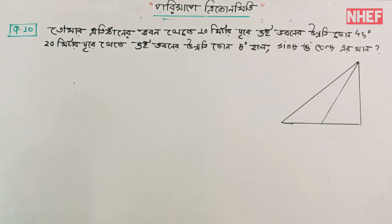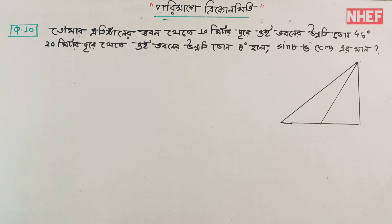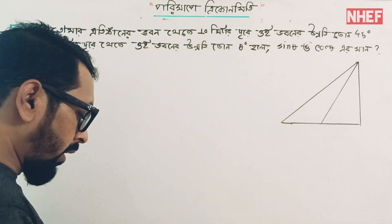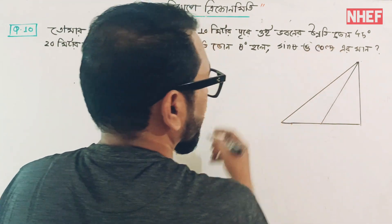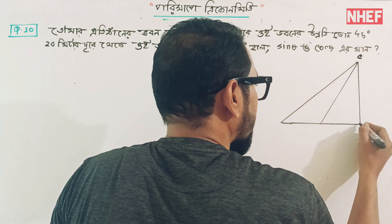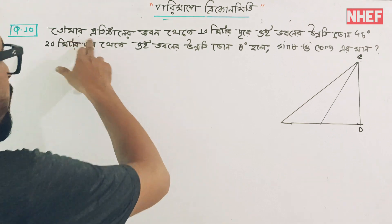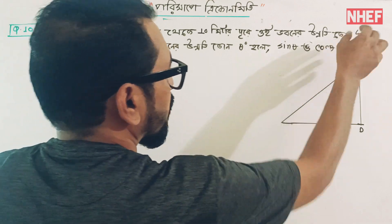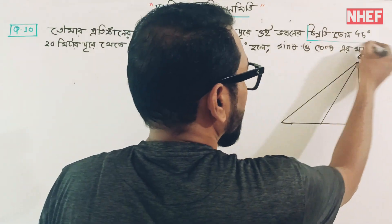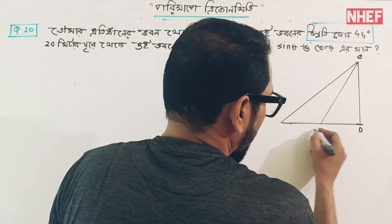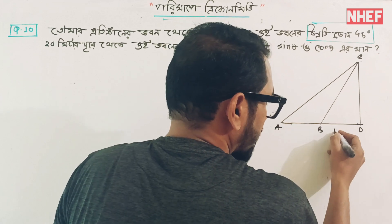Very good. A to the distance is 10 meters and A to the distance is 10 meters.